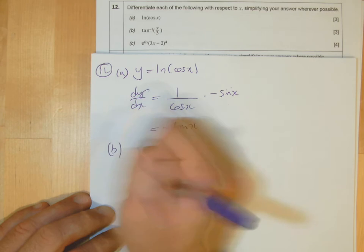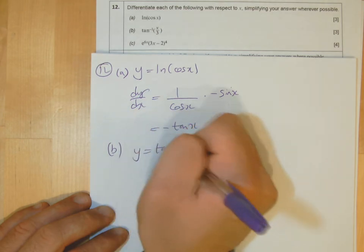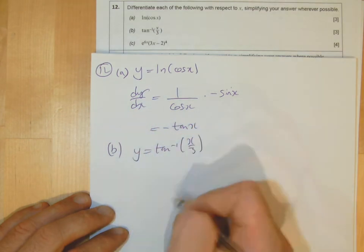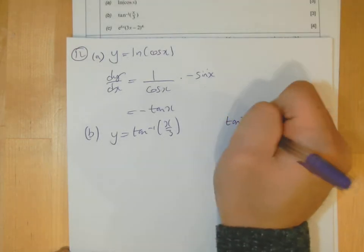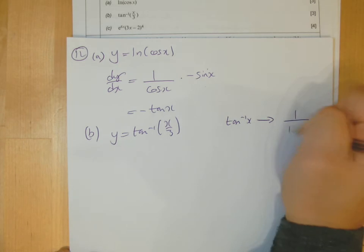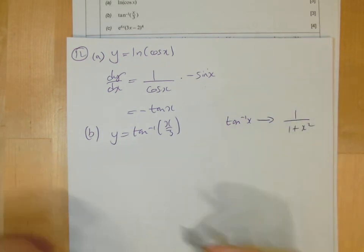Part b: y equals tan to the minus 1 of x over 3. Now you've got to use the rule which is in the formula booklet. So tan to the minus 1 of x becomes 1 over 1 plus x squared. Use it.